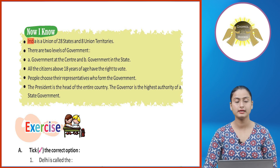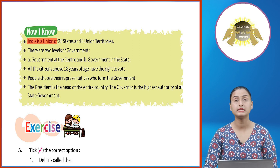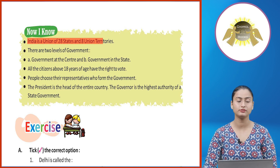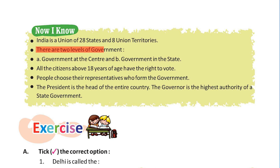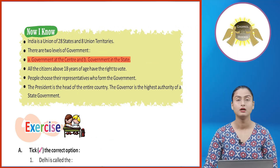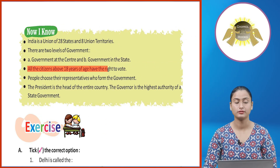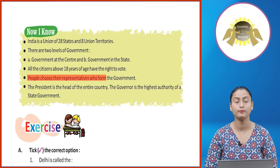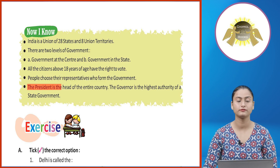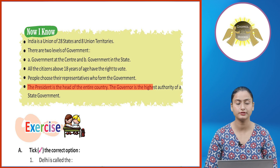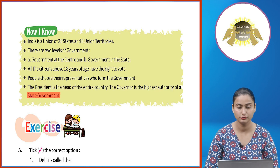Now I know: India is a Union of 28 States and 8 Union Territories. There are two levels of Government: (A) Government at the Centre and (B) Government in the State. All citizens above 18 years of age have the right to vote. People choose the representatives who form the Government. The President is the head of the entire country, and the Governor is the highest authority of a State Government.